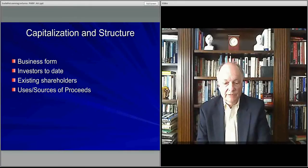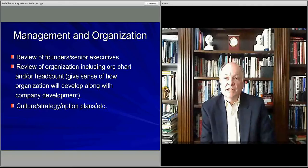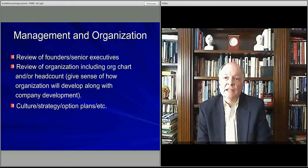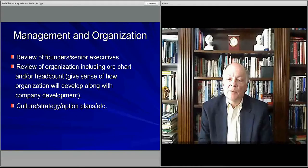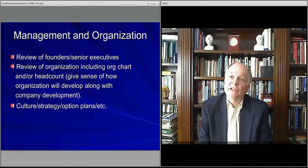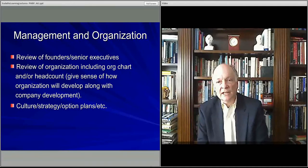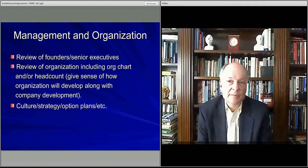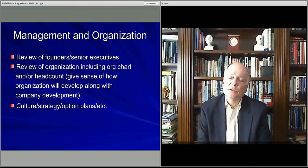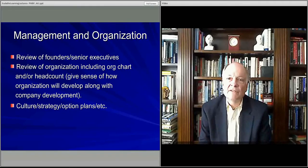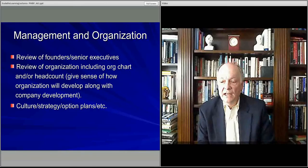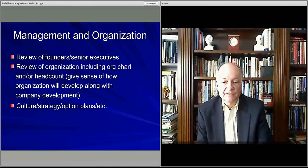With respect to management and organization, what you want to include is the founders of your organization and senior executives. You want to talk about what their backgrounds are in summary. You tend to include more details like CVs and resumes in an appendix, but you do want to give a little bio of each person, why they're right for the job, and why they have the skills that they need going forward.